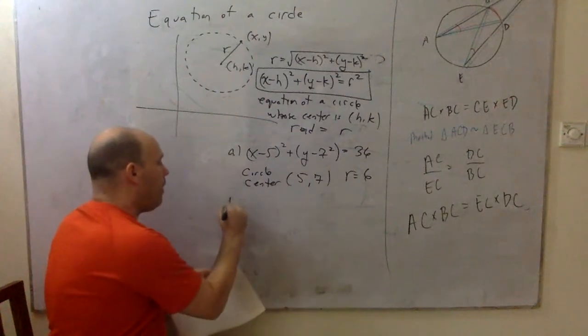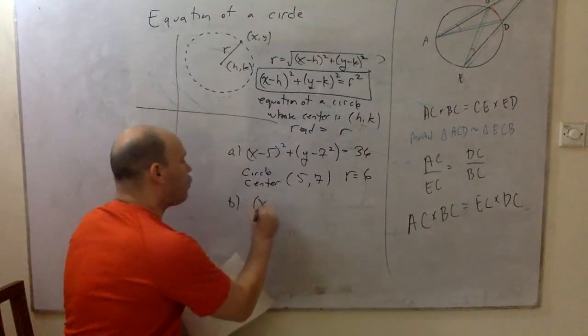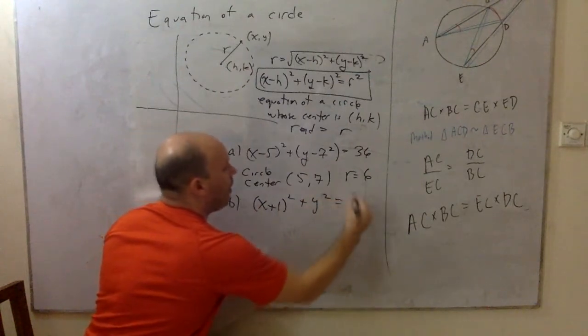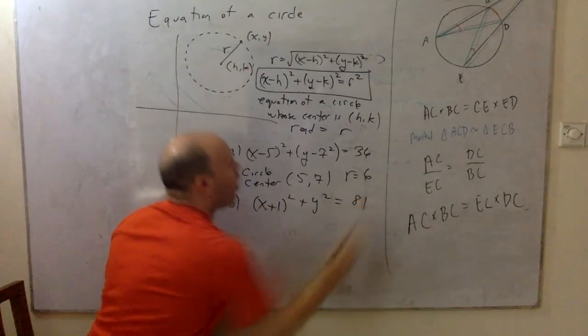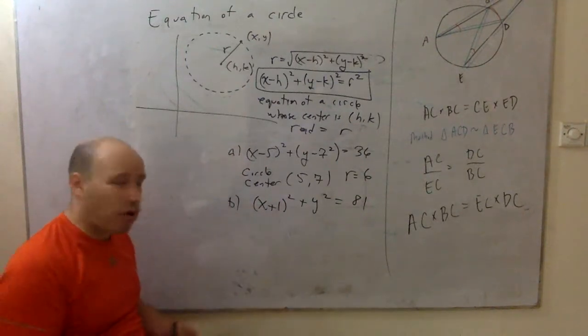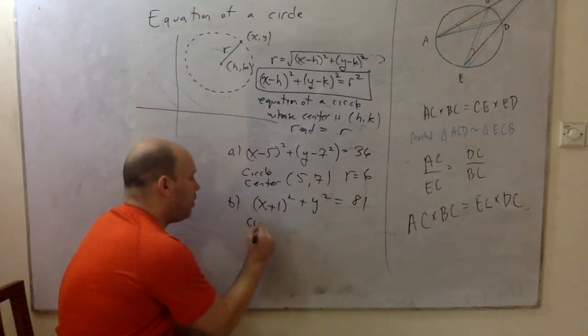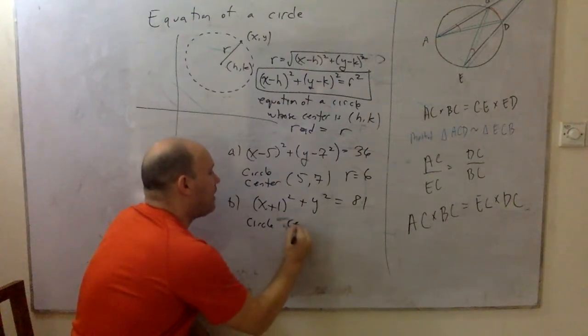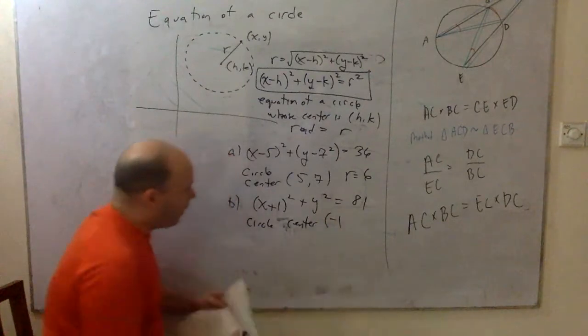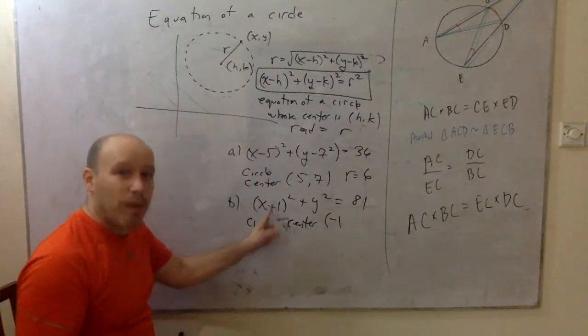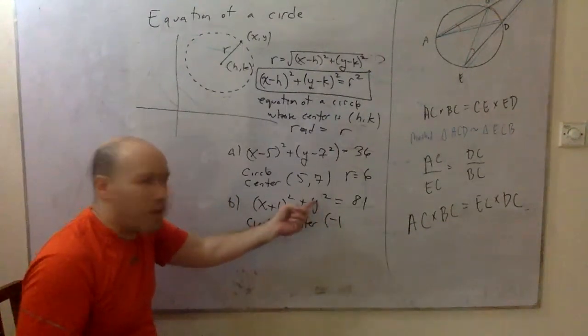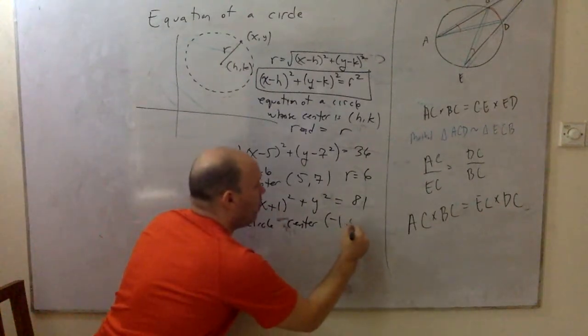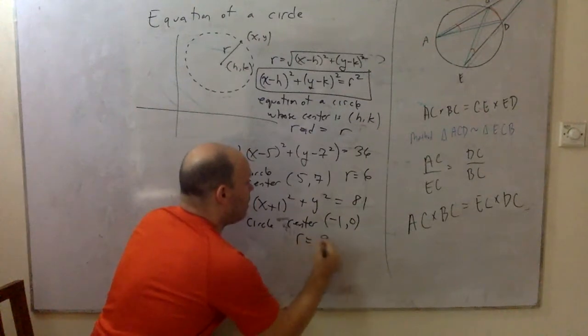Let's try another one. How about this one? (x plus 1) squared plus y squared equals 81. So you say, okay, that's a circle. The center is negative 1 because there's a plus 1 here, so it becomes negative 1. The question is, well, there's no number there. Well, there's always secretly a number there. It's y plus 0. So the center is (-1,0). And the radius is 9.